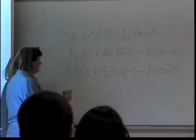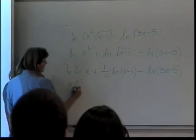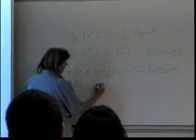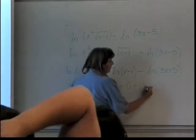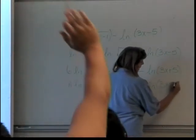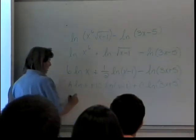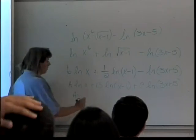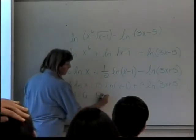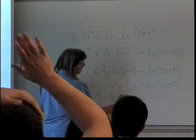Now, for web work, it's going to tell you this is A times the natural log of X plus B times the natural log of X minus 1, plus C times the natural log of 3X plus 5. And you're supposed to tell me what A is. What's A? 6. What's B? 1 half. And what's C?